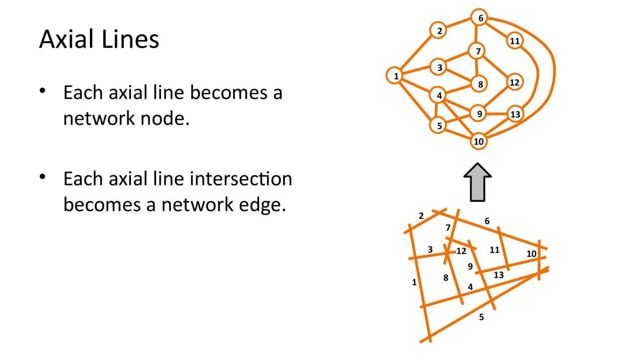The Axial Line Map is then converted into a network. However, in this process, nodes and edges are reversed. Each Axial Line becomes a node, and each point of intersection between axial lines becomes an edge.